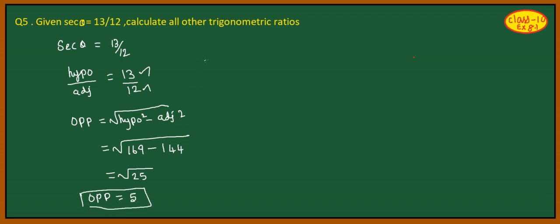So opposite side is 5. We want to calculate all other trigonometric ratios. The ratios are: first, sin theta; second, cos theta; then tan theta; then secant theta — already we know; then cosecant theta.